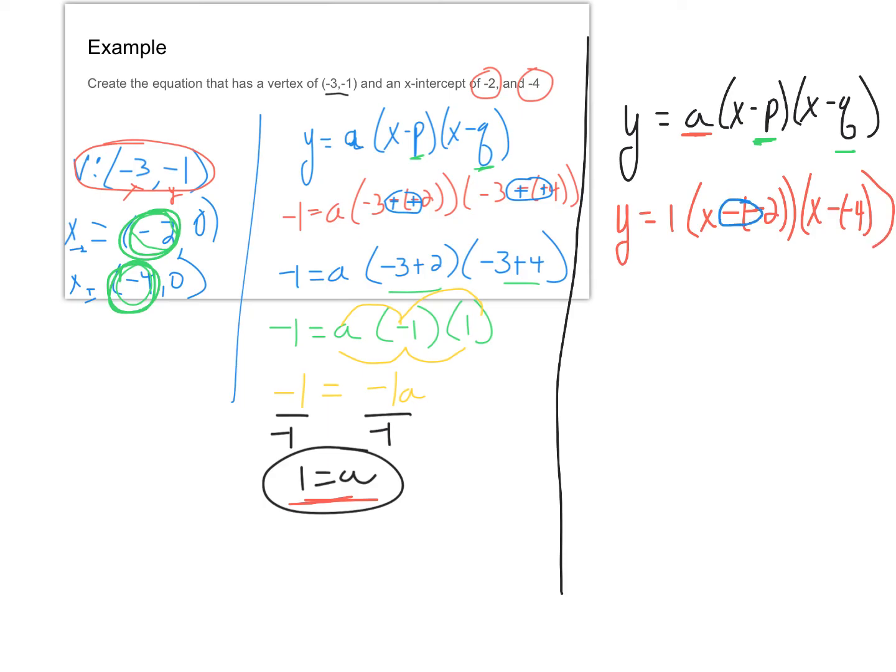Now we're going to take care of this just like we did before. So we're going to have Y equals one times X plus two times X plus four.